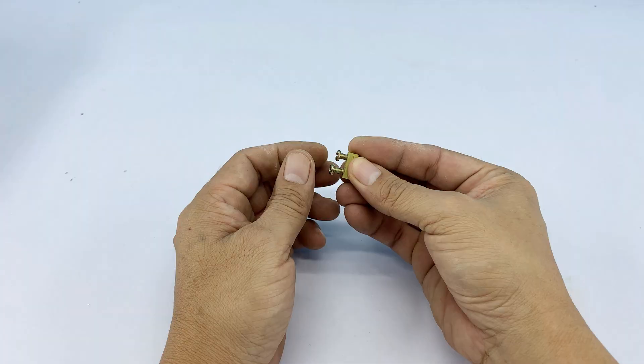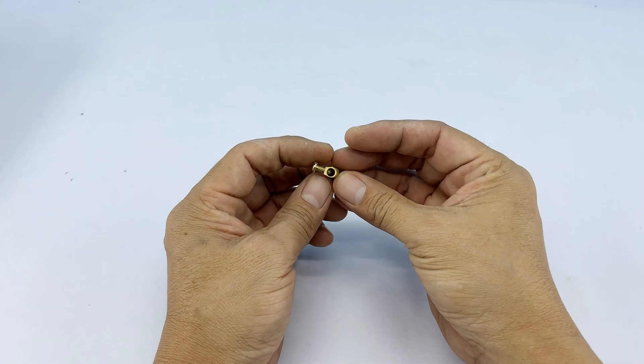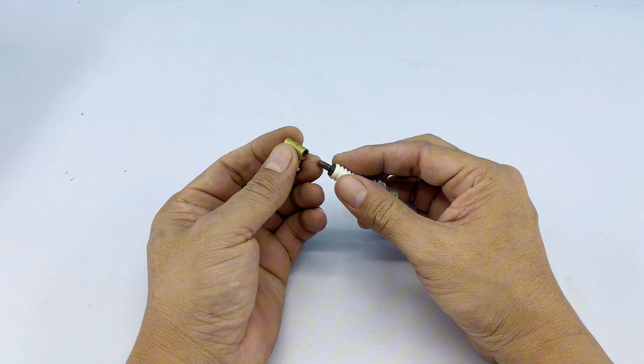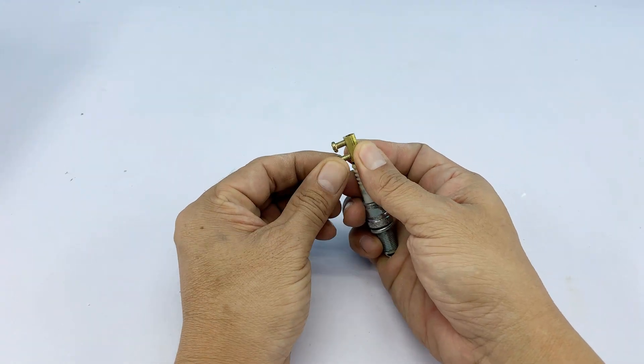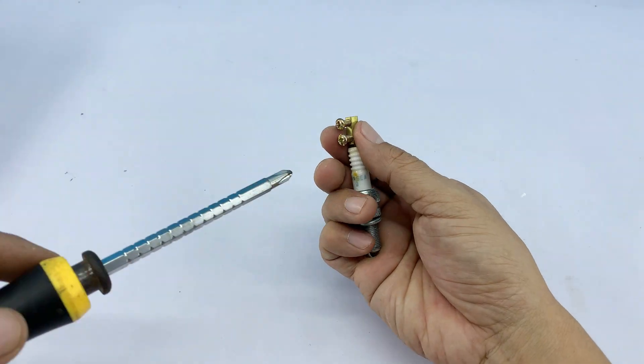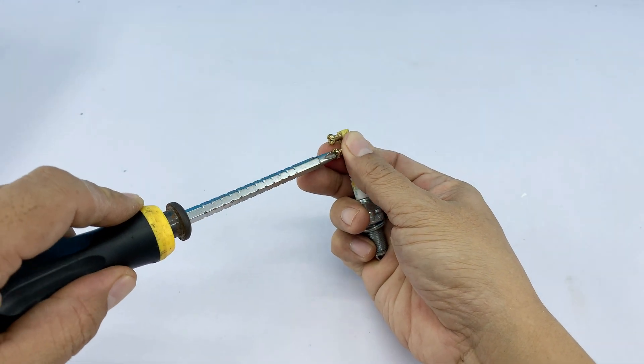That way, electricity has a stable, direct path and nothing feels loose while you're working. Think of it as fitting in a small puzzle piece, so the whole setup runs smoothly. Just turn it gently until the threads bite together and everything sits tight and ready for the next step.